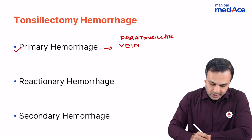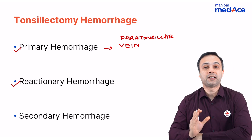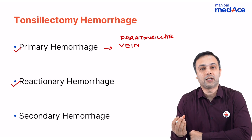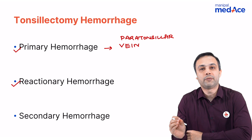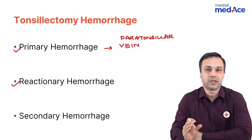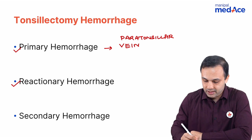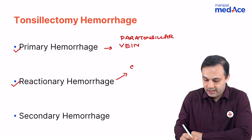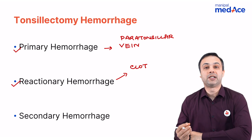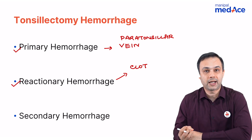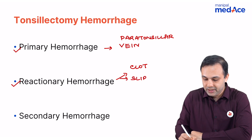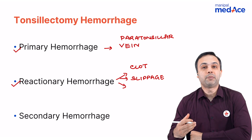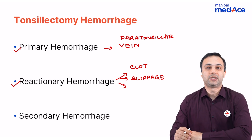The second important type of hemorrhage is a reactionary hemorrhage. It usually occurs in the postoperative ward, that is within 12 to 24 hours following a tonsillectomy. There are multiple reasons: one is a clot sitting in the fossa which does not allow the muscles to contract; the second is slippage of ligatures; and the third is blood pressure variation following the procedure.